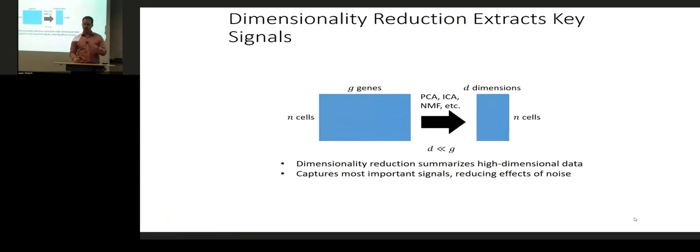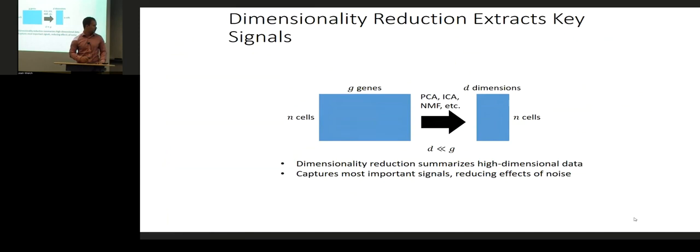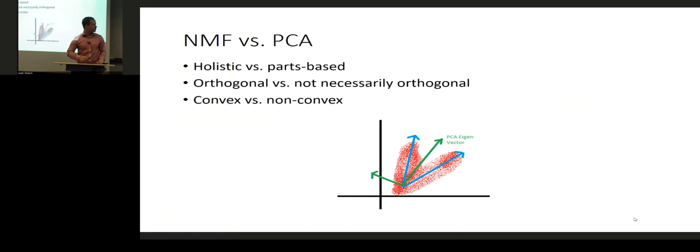A necessary first step for a lot of single-cell data processing is performing dimensionality reduction, which is helpful for two reasons. First, as a computational and practical matter, reducing the number of dimensions allows you to operate more efficiently — rather than working with a 10,000 by 20,000 dimensional matrix, we can work with a 10,000 by 20 dimensional matrix. Techniques used include PCA, ICA, and NMF. These approaches can also be thought of as denoising the data or extracting the most dominant signals. In addition to computational efficiency, dimensionality reduction allows us to denoise the data and account for some of the biases.